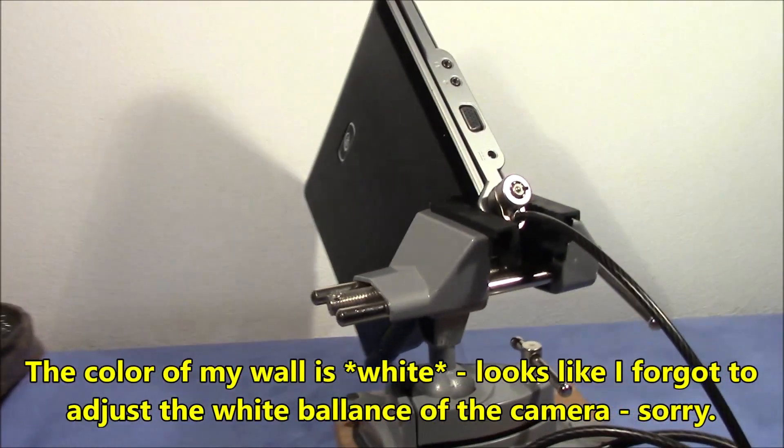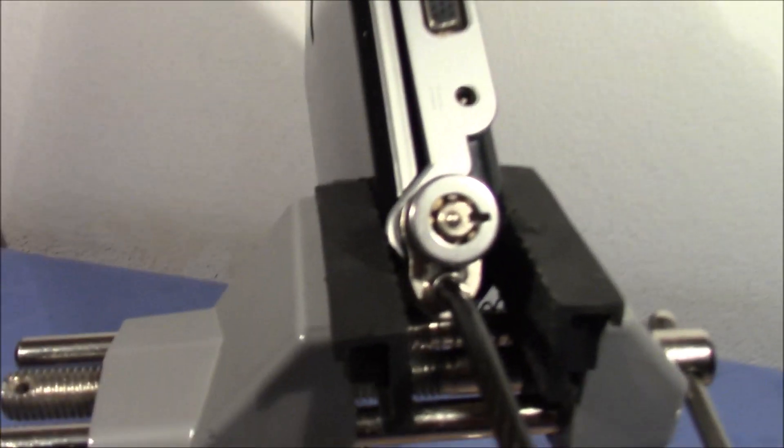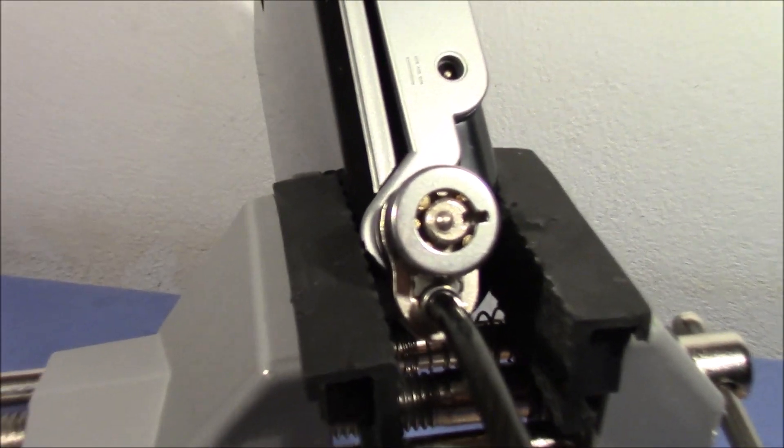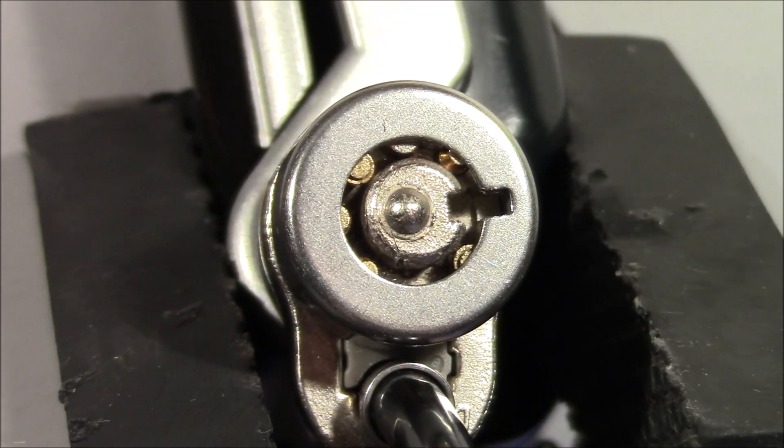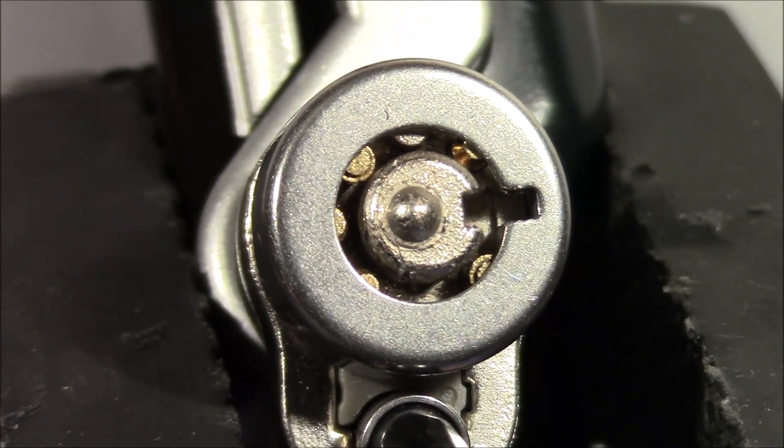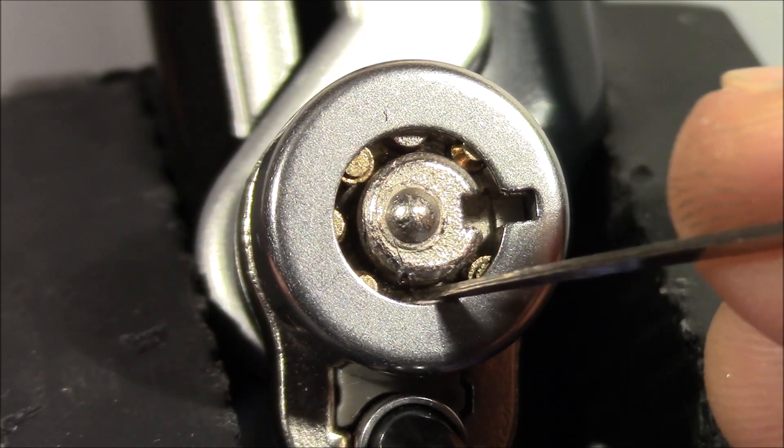Here you can see my setup. I just clamped the little laptop in my vise. And I hope this will give you a more or less stable view to the lock when I pick it. We can see the dummy pin here. Just a piece of metal and the empty spot down there.